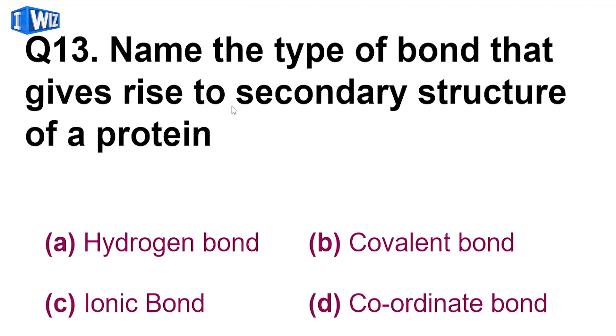So next is name the type of bond that gives rise to secondary structure of a protein. Protein ke structure mein, secondary structure jo banta hai, jab coiling hooti hai ya pleats banti hai, toh unko stabilize karne wala bond hoota hai hydrogen bond.